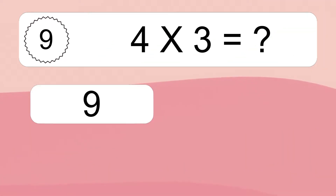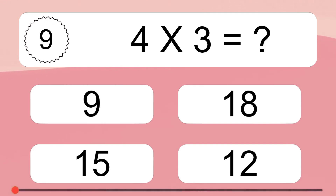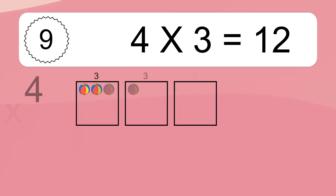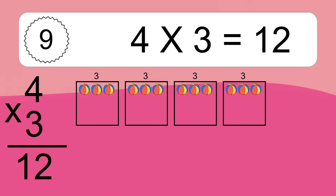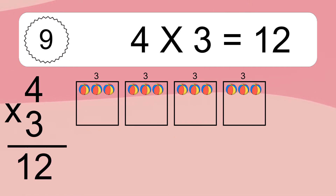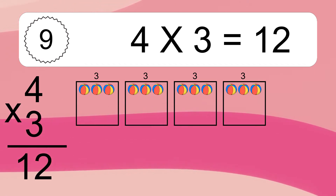Four times three equals what? Four times three equals twelve. We have four boxes and each box has three colorful balls inside. If you count all the balls in all the boxes together, you will have four times three balls. This equals 12 balls.